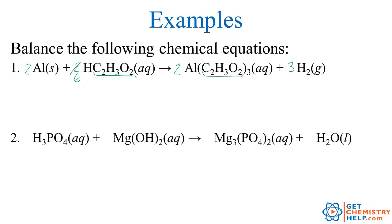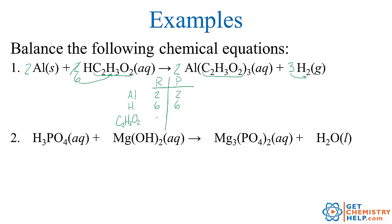So let's go back through and double check. Two aluminums on the reactants, two aluminums on the products. Six hydrogens on the reactants — three times two — six hydrogens on the products. Six acetates on the reactants — two times three — six acetates on the products. So that one's balanced.